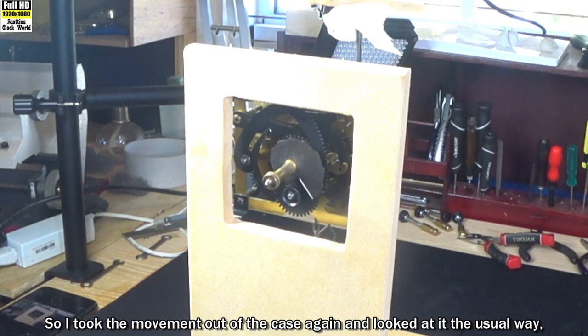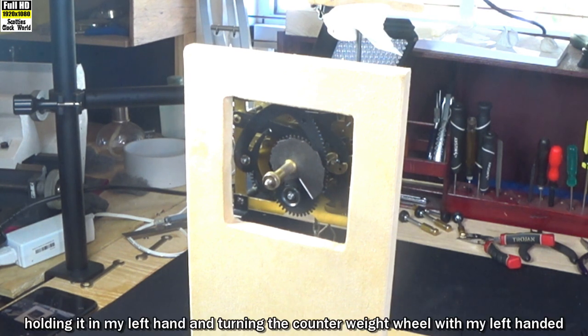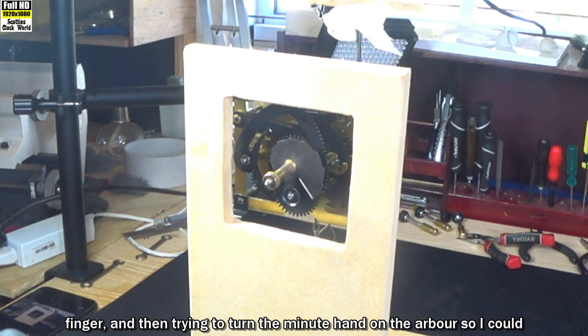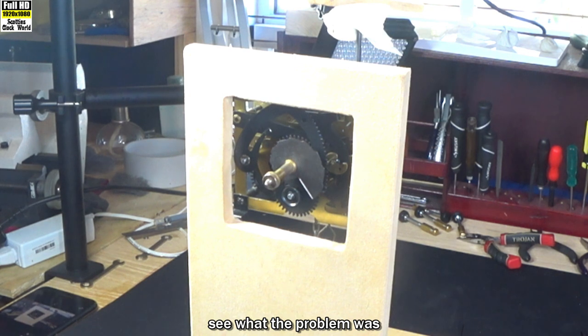So I took the movement out of the case again and looked at it the usual way - holding it in my left hand and turning the counter wheel with my left-handed finger, then trying to turn the minute hand on the arbor so I could see what the problem was. It was very hard to do.